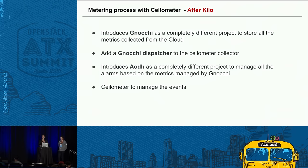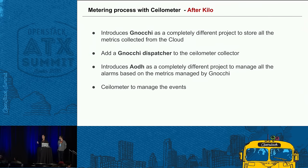They introduced Gnocchi as a completely different project to store all the metrics collected from the cloud in a new format. They also added a new Gnocchi dispatcher used by the Ceilometer collector to store metrics into Gnocchi. They introduced another service called AODH to manage alarms and notifications by analyzing metrics from Gnocchi. Ceilometer now just manages events from the cloud.